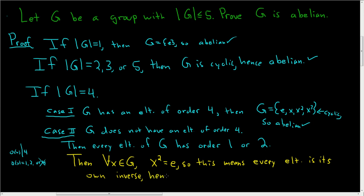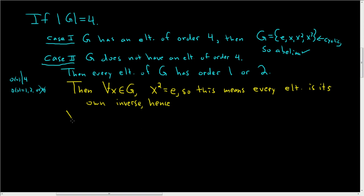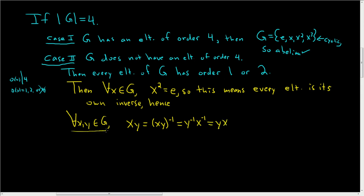Hence, for all X, Y in G, we can look at the element XY. Since every element is its own inverse, XY equals (XY) inverse, which equals Y inverse X inverse. But every element is its own inverse, so this equals YX. Since XY = YX for all X, Y in G, G is abelian.